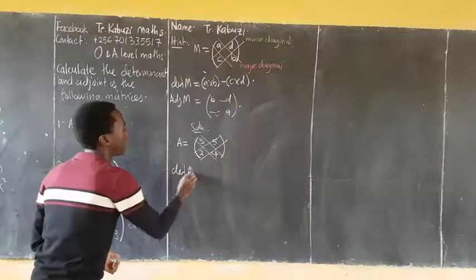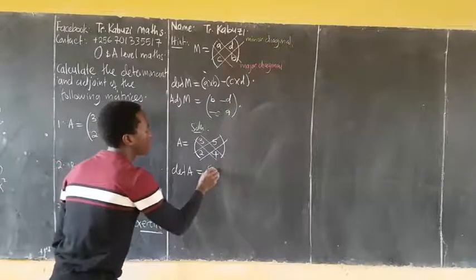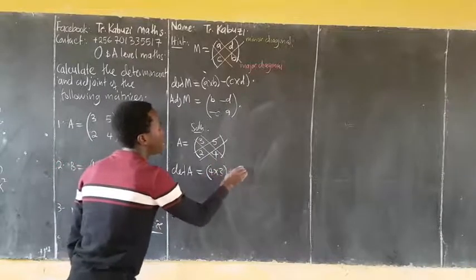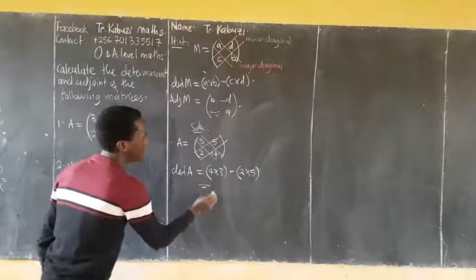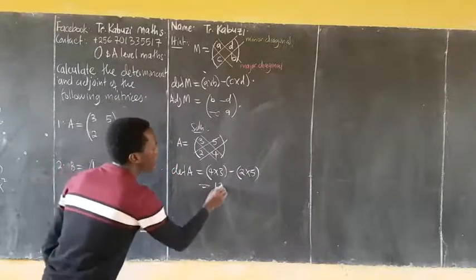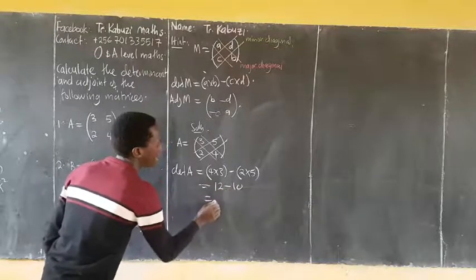My determinant of A, the product of elements in the major diagonal, 3 times 5, minus 4 times 2. So my determinant is 7.